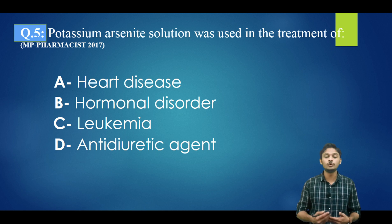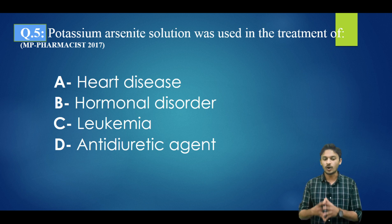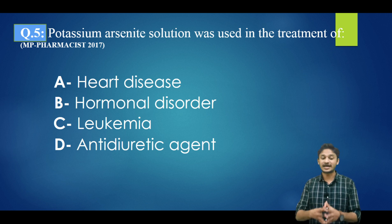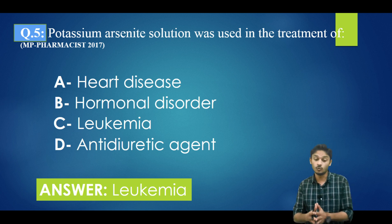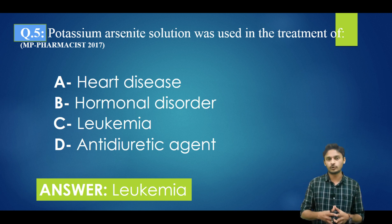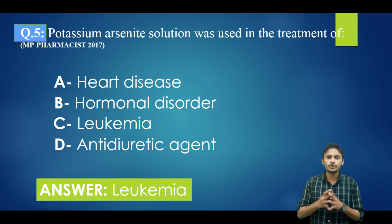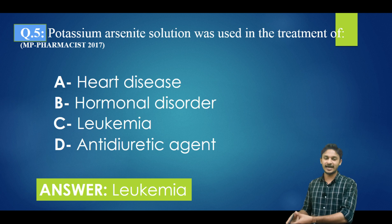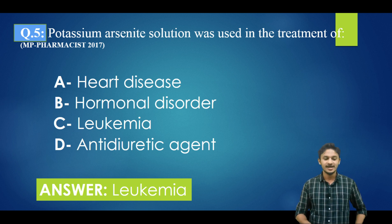Question number five: potassium arsenate solution was used in the treatment of — options are: heart disease, hormonal disorders, leukemia, antidiuretic agent. The correct answer is option C — leukemia. Potassium arsenate was used previously for the treatment of leukemia. One important point: arsenic is also known as the 'poison of kings' and 'king of poisons'.